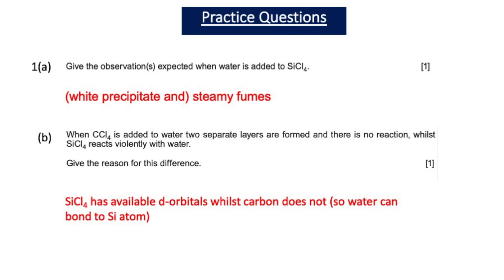Question 1A asks you to give the observation expected when water is added to SiCl4 — you should say a white precipitate and steamy fumes are formed; that gets you one mark. For Part B, you're asked why CCl4 forms two separate layers with no reaction while SiCl4 reacts violently with water. The reason is that SiCl4 has available d-orbitals whilst carbon does not, so water can bond to the silicon atom. One mark if you said that.